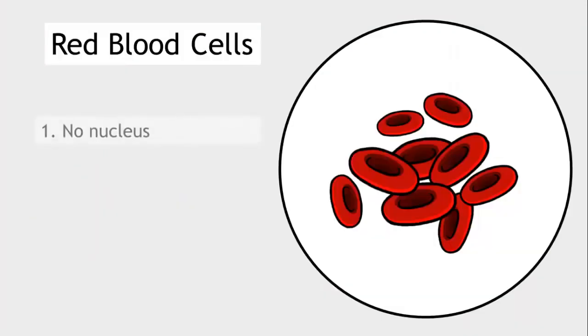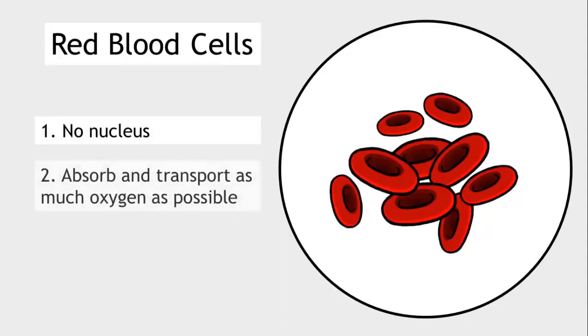Red blood cells do not possess a nucleus. This is so that they have got enough space to be able to absorb and transport as much oxygen as possible.